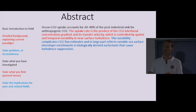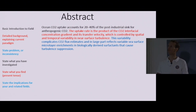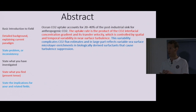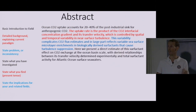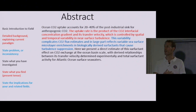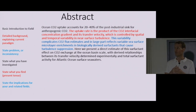The third phrase states the problem or inconsistency in current research: 'This variability complicates CO2 flux estimates and in large part reflects a variable sea surface microlayer enrichments in biologically derived surfactants that cause turbulent suppression.' Something is complicated, something we don't really understand today. Then you move on by stating what you have investigated: 'Here we present a direct estimate of this surfactant effect on CO2 exchange at the ocean basin scale, with derived relationships between its transfer velocity determined experimentally and total surfactant activity for Atlantic Ocean surface seawaters.'